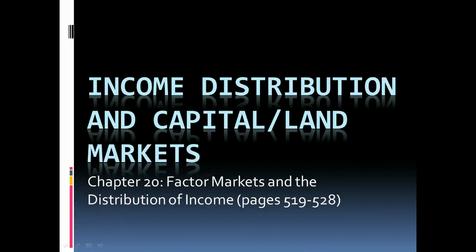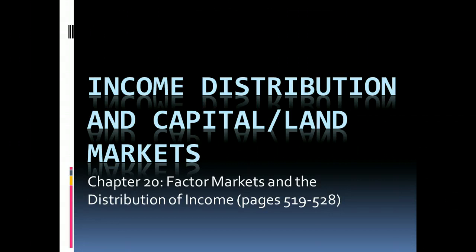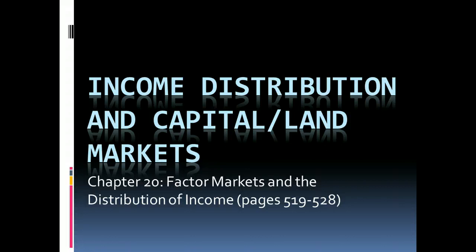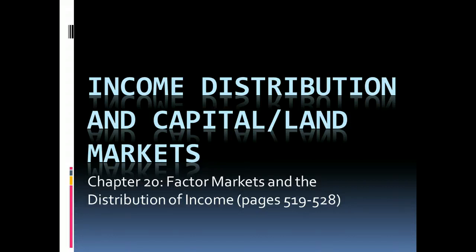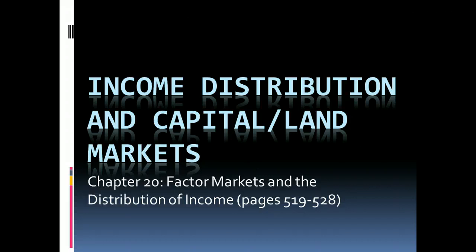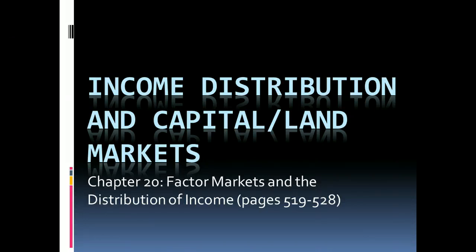Hi, welcome back. Today we're going to look at income distribution, and we'll take a look at the capital and land markets, which are the last two factors of production we haven't talked about yet. All this information is in your textbook, Chapter 20, and we're going to be looking at something known as the marginal productivity theory of income distribution. We'll look at why wages may be different for workers, and then we'll look at the capital and land markets and look at the way to find equilibrium in those markets.